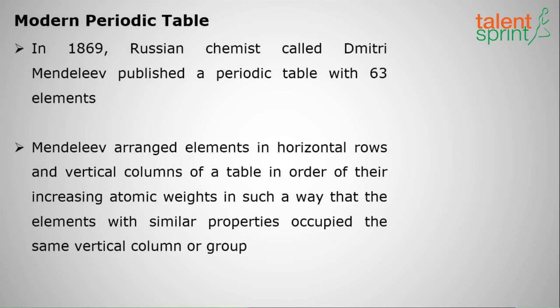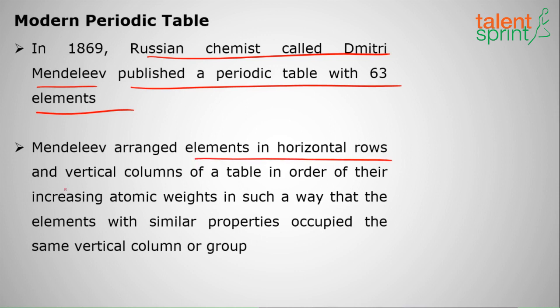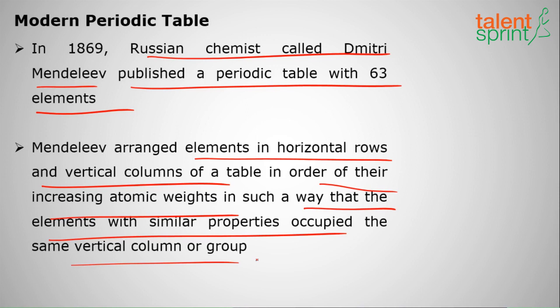Moving on to the modern periodic table. In 1869, Russian chemist Dmitri Mendeleev published a modern periodic table with 63 elements. Mendeleev arranged elements in horizontal rows and vertical columns in order of their increasing atomic weights.